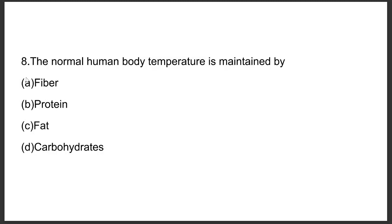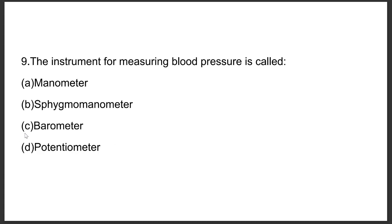Question number eight: The normal human body temperature is maintained by — Option A: Fiber, Option B: Protein, Option C: Fat, Option D: Carbohydrates. The answer is Option C, fat.